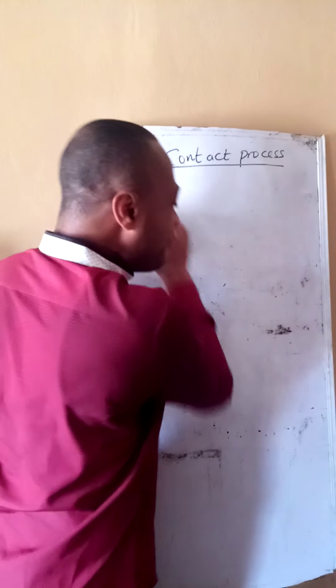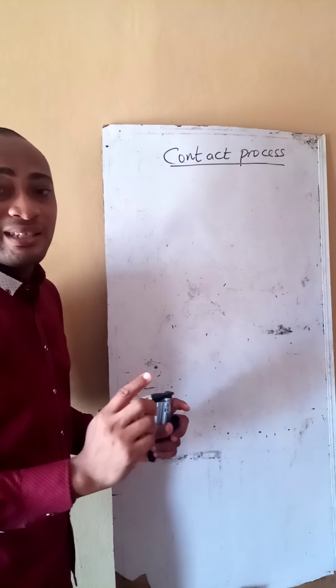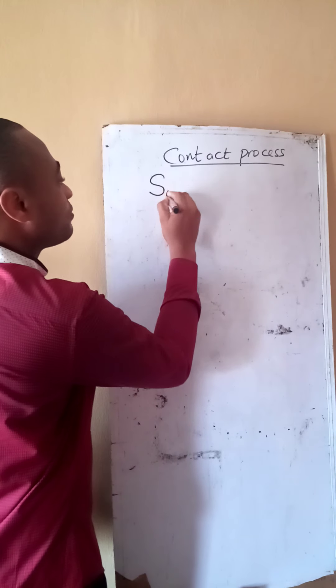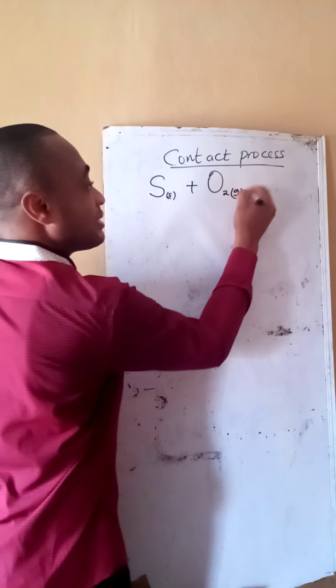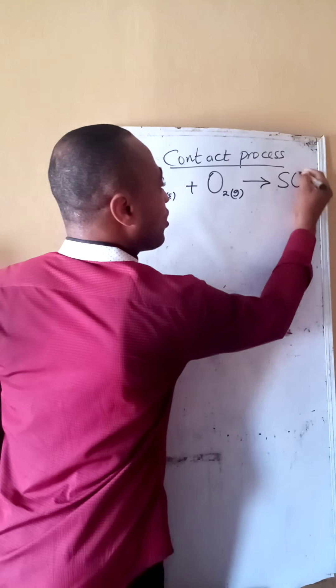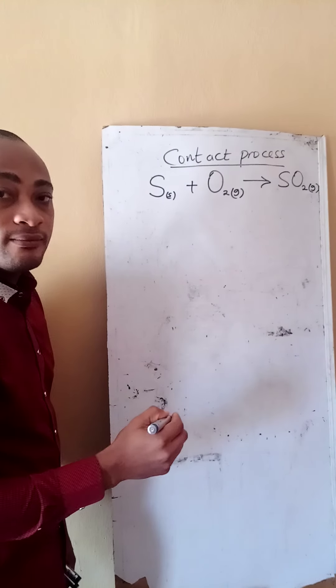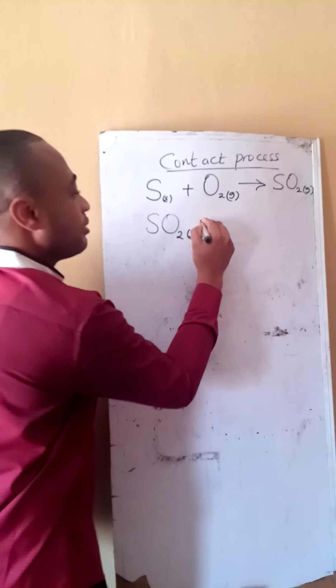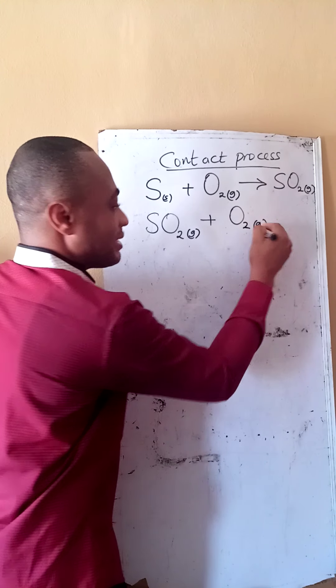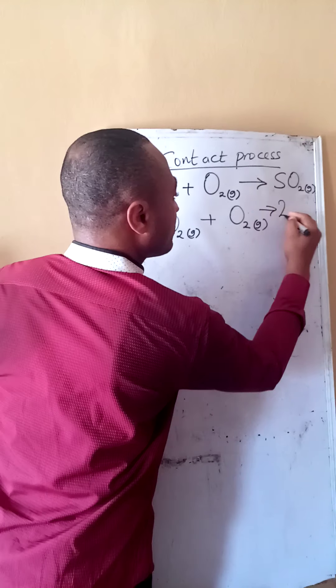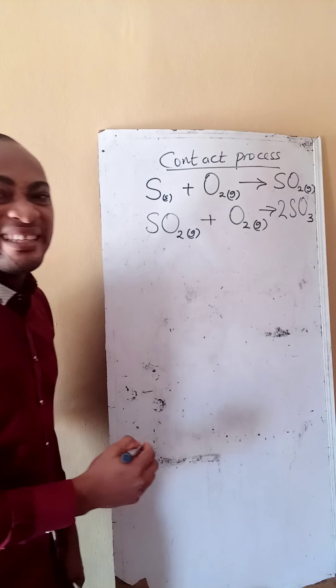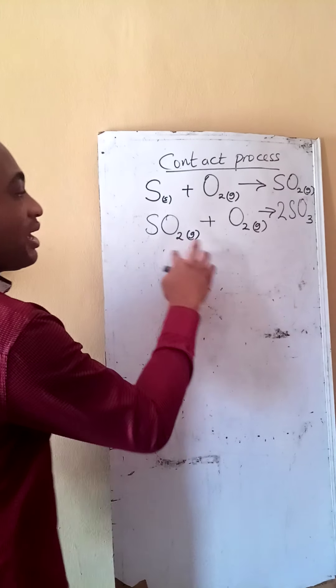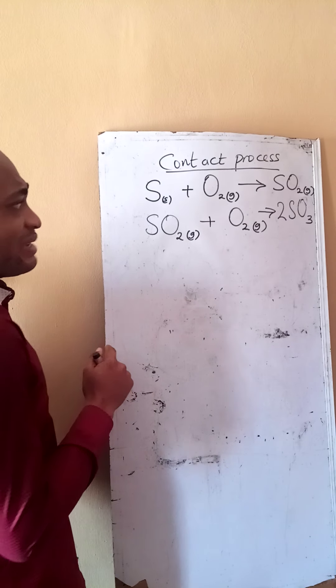If we are to manufacture our sulfuric acid in the contact process, these are the reactions. First I have sulfur reacting with oxygen gas to give me sulfur four oxide gas. Sulfur four oxide gas produced in reaction one will be subjected to more oxygen gas to give us sulfur six oxide, but sometimes they call it sulfur trioxide.